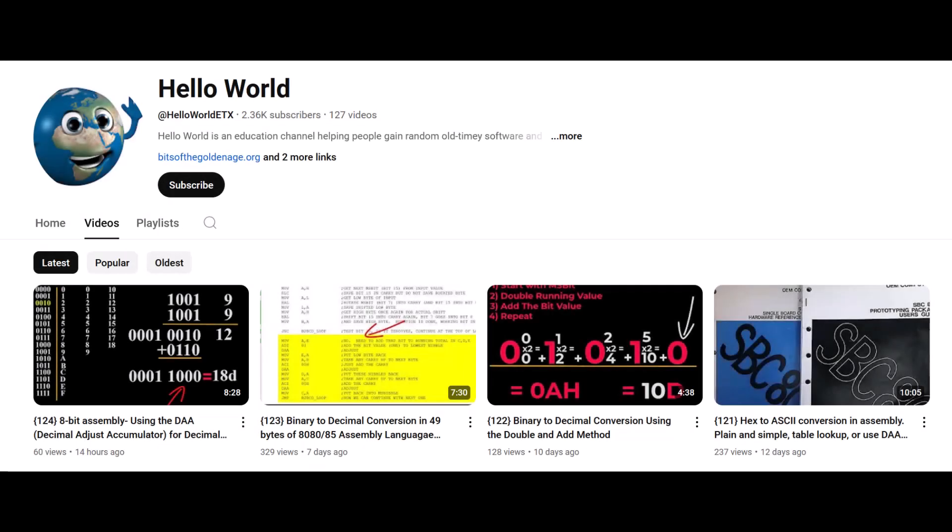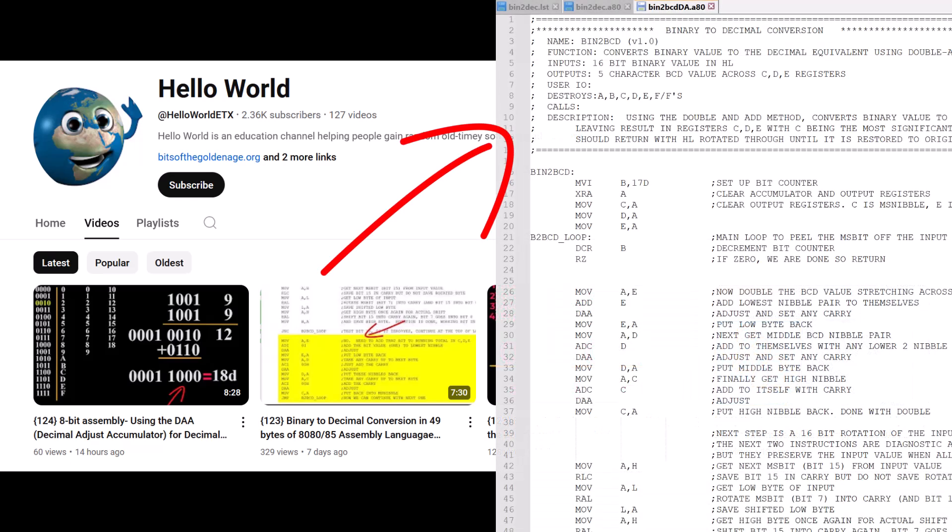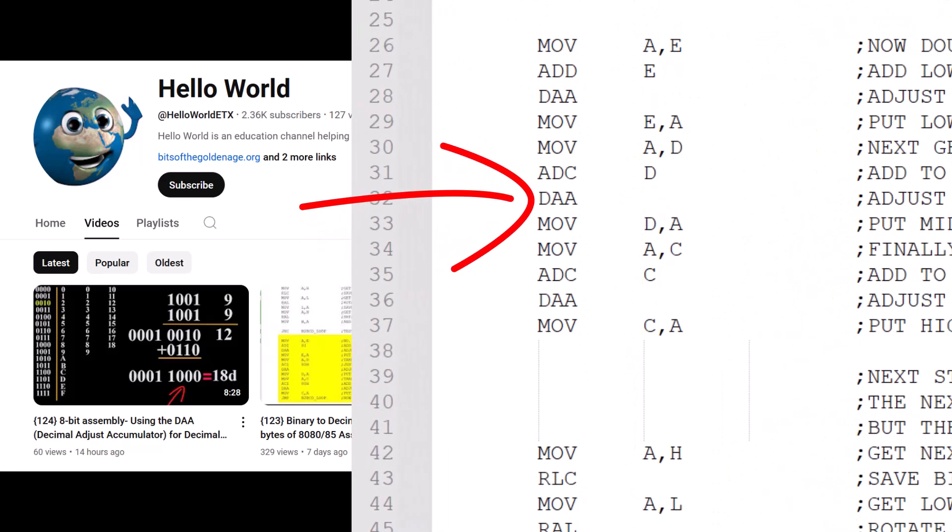Hello world, it's Craig. My last few videos have been about decimal math, including using the double and add method of converting a binary value into its decimal representation. Video 123 showed assembly language 8080-8085 code which relied on the DAA instruction, the decimal adjust accumulator instruction, to do the necessary adjustments to keep the output value as packed binary coded decimal.